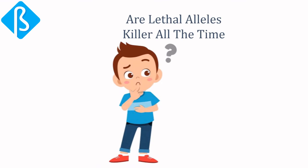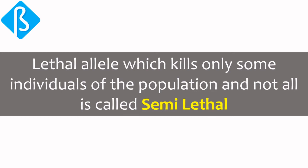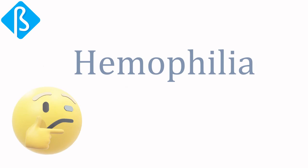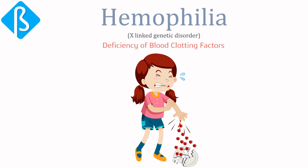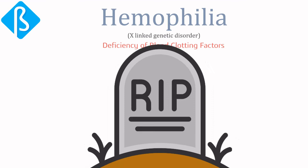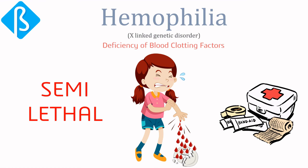Lethal alleles are not always killers — sometimes they spare the lives of some individuals in the population. This kind of lethal allele, which kills only some individuals and not all, is called semi-lethal. Consider hemophilia — an X-linked genetic disorder causing deficiency of blood clotting factors. If a hemophiliac sustains an injury, the blood will not clot and urgent attention is needed, or else the person could die from blood loss. The responsible mutated allele is semi-lethal because not every hemophiliac will die if they receive proper attention.